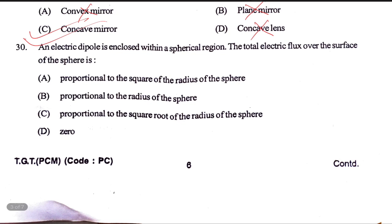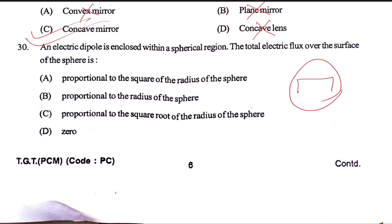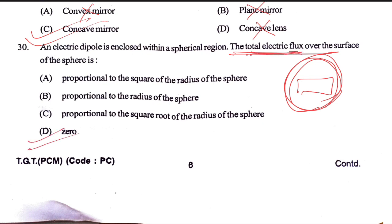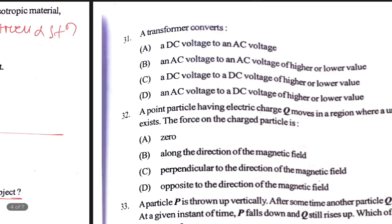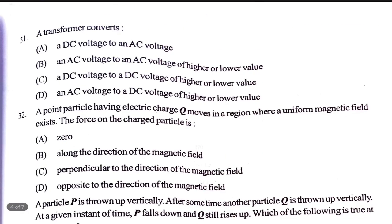A charge is enclosed within a spherical region, and the total flux over the surface of the sphere — for a sphere which is not charged, flux means the electric field lines. The detector reads zero volts for an uncharged sphere.